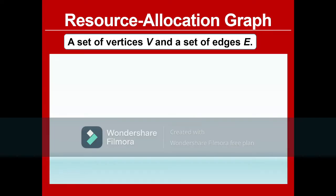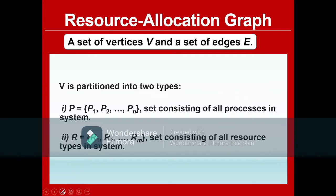Now we understand what a graph is, but what is a resource allocation graph? In a resource allocation graph, the vertex set V is partitioned into two types: vertices can be a process or vertices can be a resource. If it is a process, it will have names like P1, P2, up to Pn — consisting of all the processes in the system. If it is a resource, we give names like R1, R2, R3, and so on.